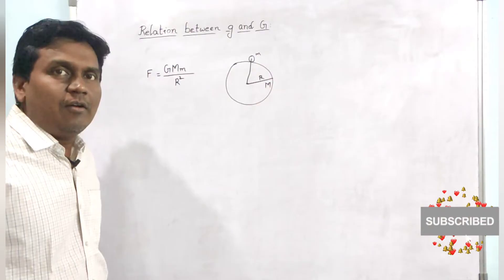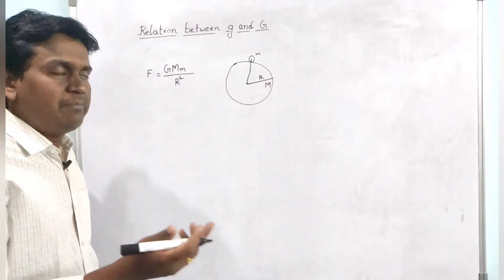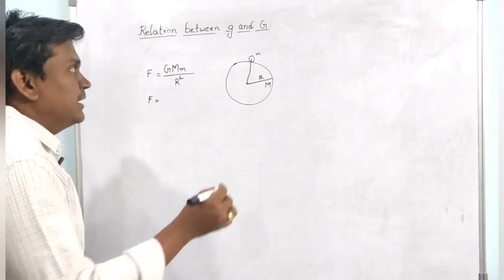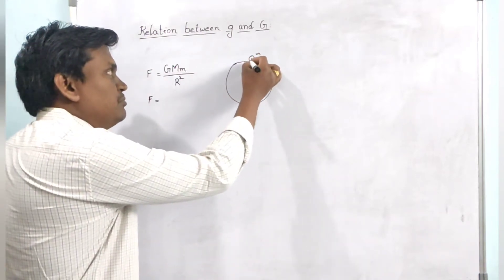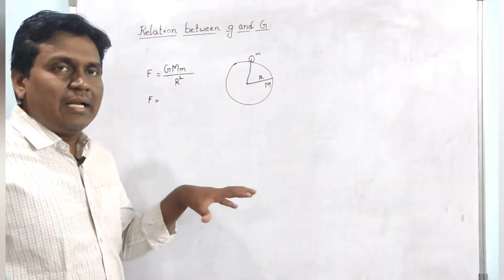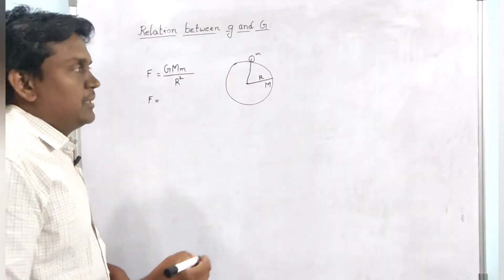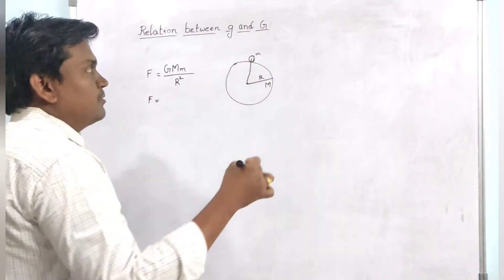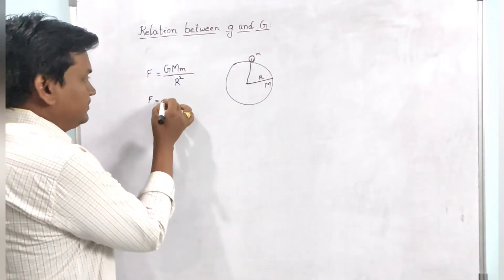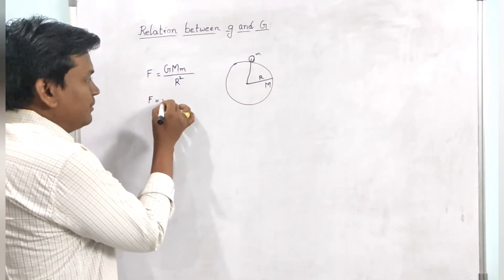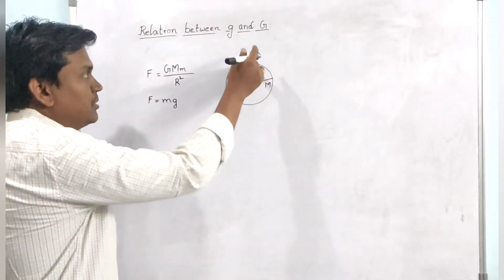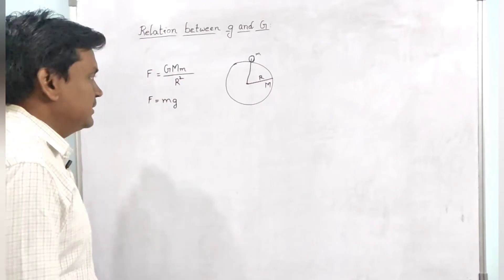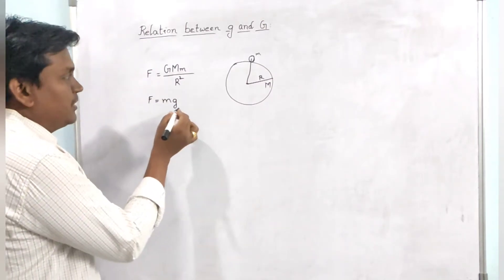From Newton's second law of motion, we know that F equal to MA. This small mass m will have some force acting on it, meaning it has some weight due to that force. That is nothing but mass into acceleration due to gravity acting on it. So F equal to mg.